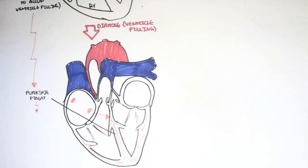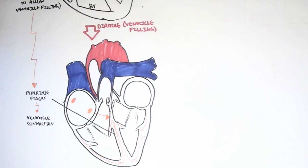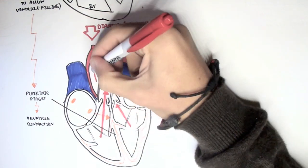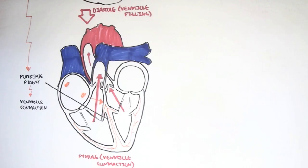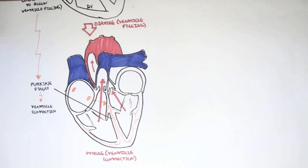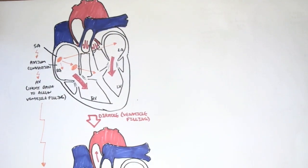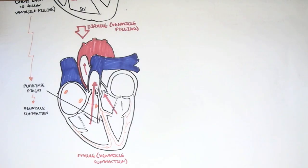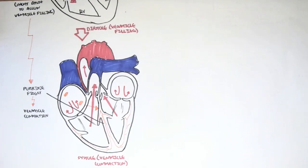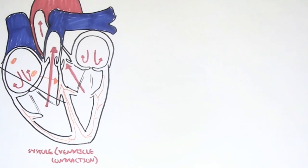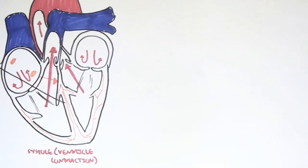From the atrioventricular node, the impulse travels to the Purkinje fibers, which cause the right and left ventricles to contract and eject blood out of the heart through the pulmonary artery and the aorta. This process is known as systole, where the ventricles contract and eject blood. So we have diastole — filling — and systole — contracting. During contraction, there can be no blood coming from the atrium to the ventricle. Note that diastole and systole can refer to both atrium or ventricle, but they tend to be used for ventricles.